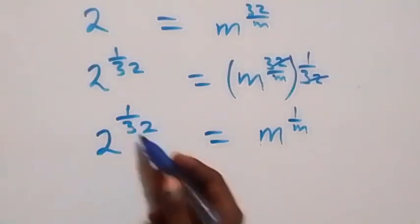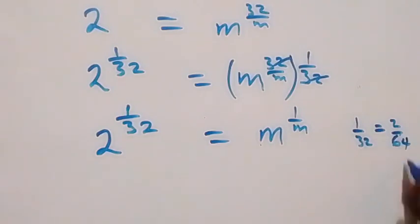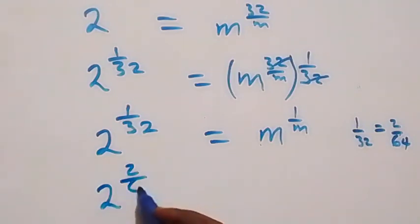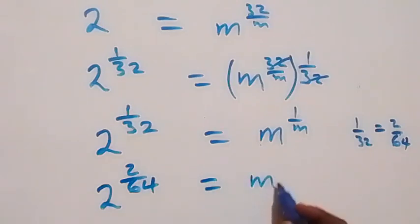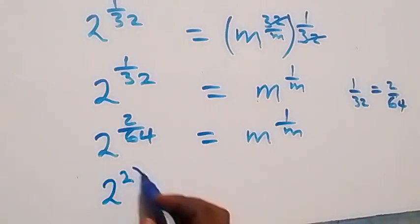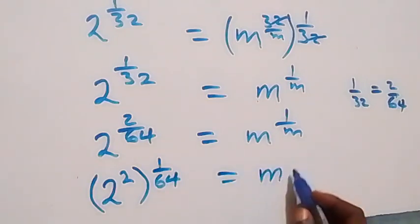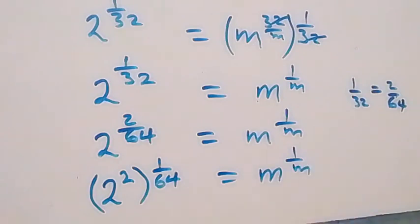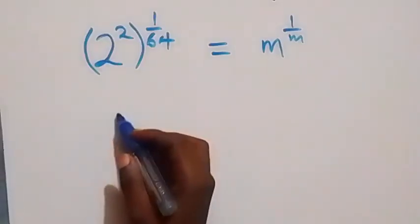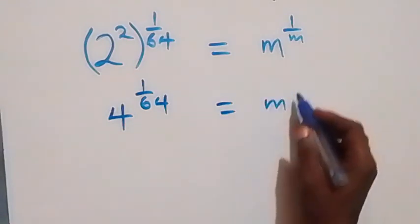Let's change 1 over 32 and write it as the equivalent fraction 2 over 64. Then we have 2 raised to power 2 over 64 equals to m raised to power 1 over m. We can separate this as 2 raised to power 2, raised to power 1 over 64, which simplifies to 4 raised to power 1 over 64 equals to m raised to power 1 over m.